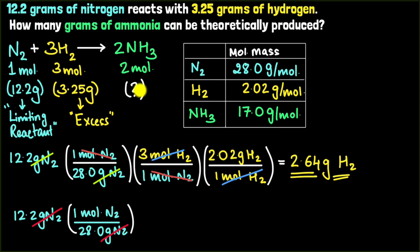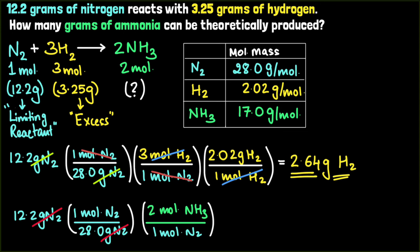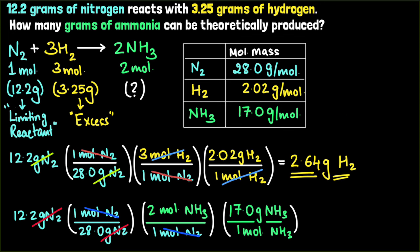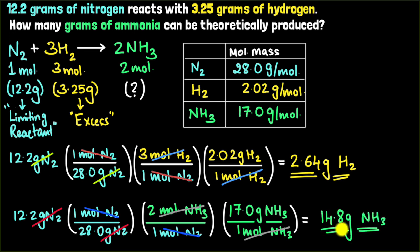Finally, convert moles of ammonia to grams using 17 grams per mole of NH₃. The moles cancel, and plugging this into the calculator gives 14.8 grams of ammonia. This is the final result.